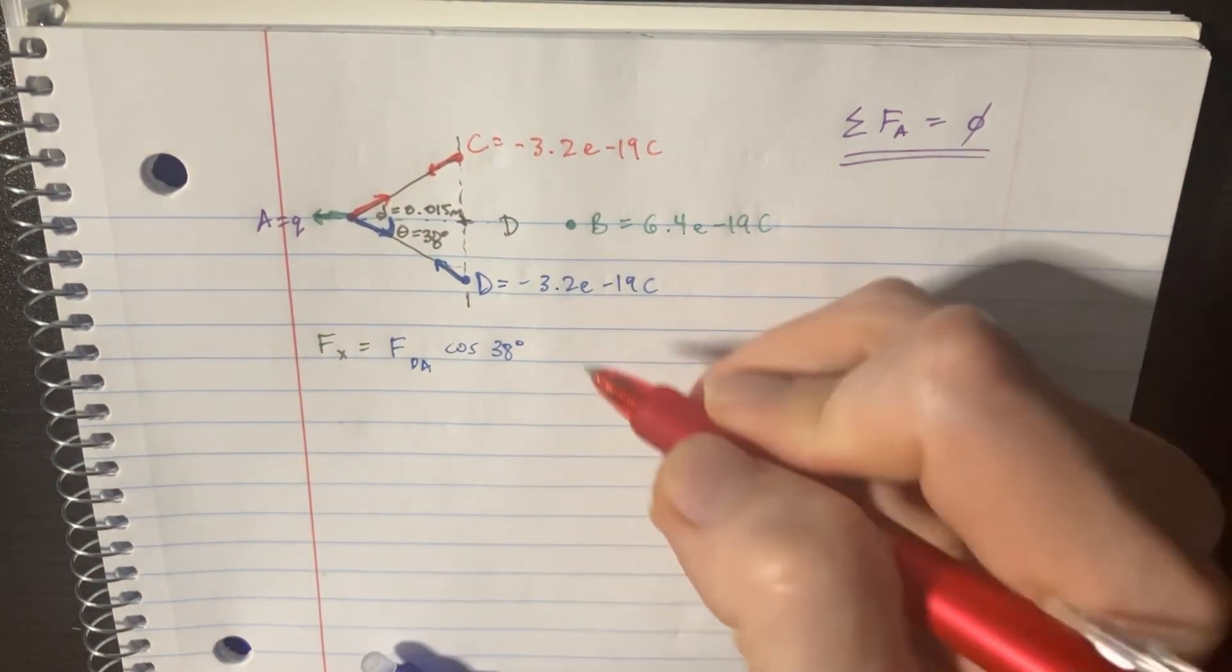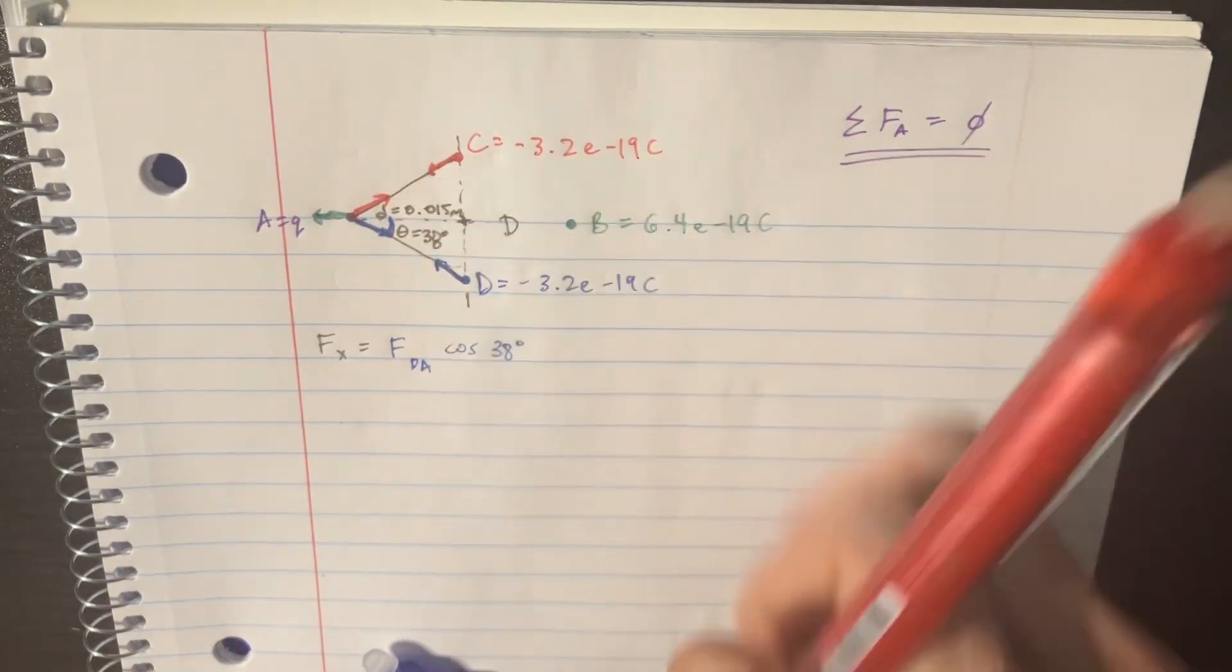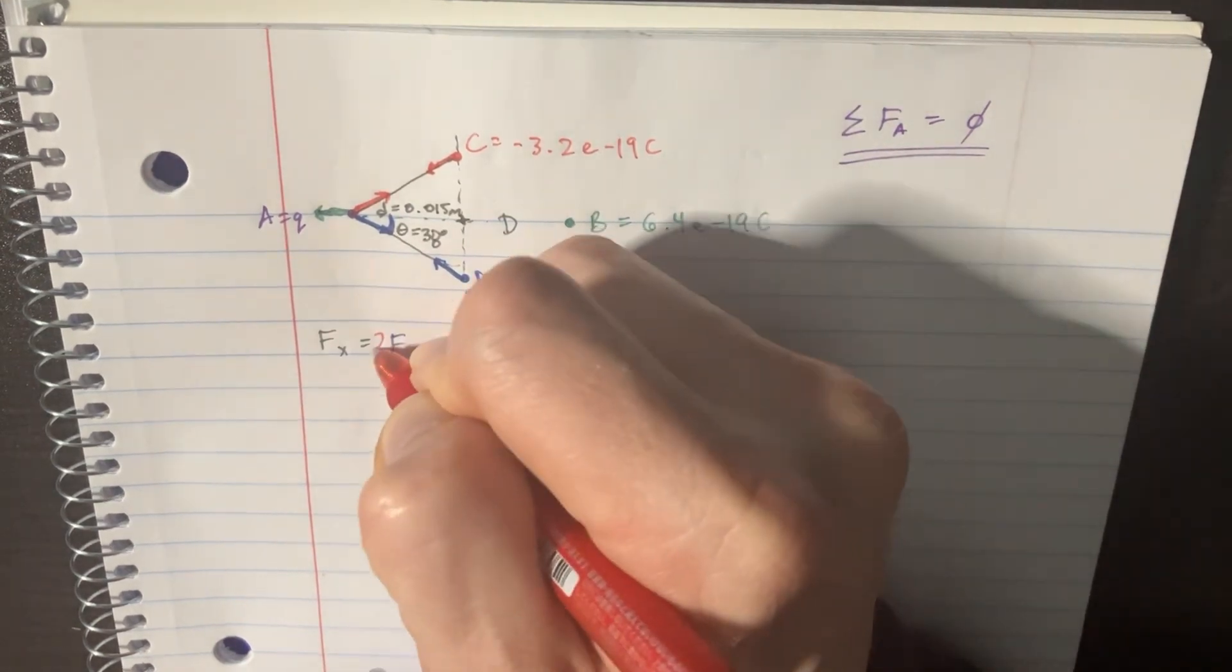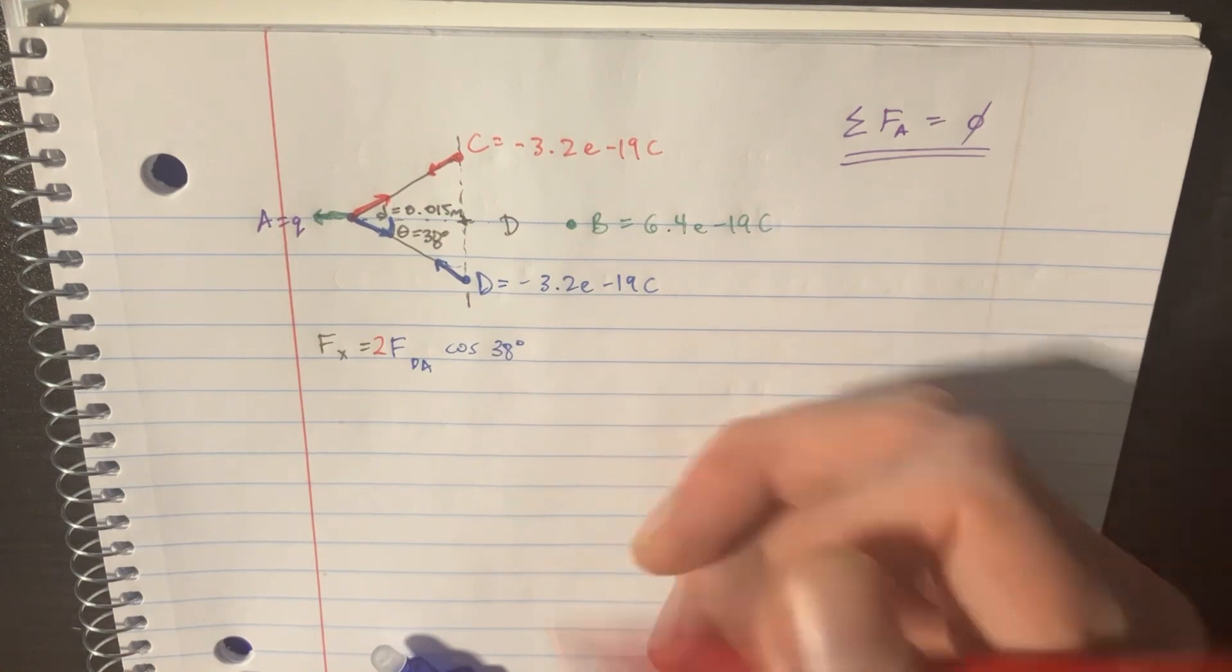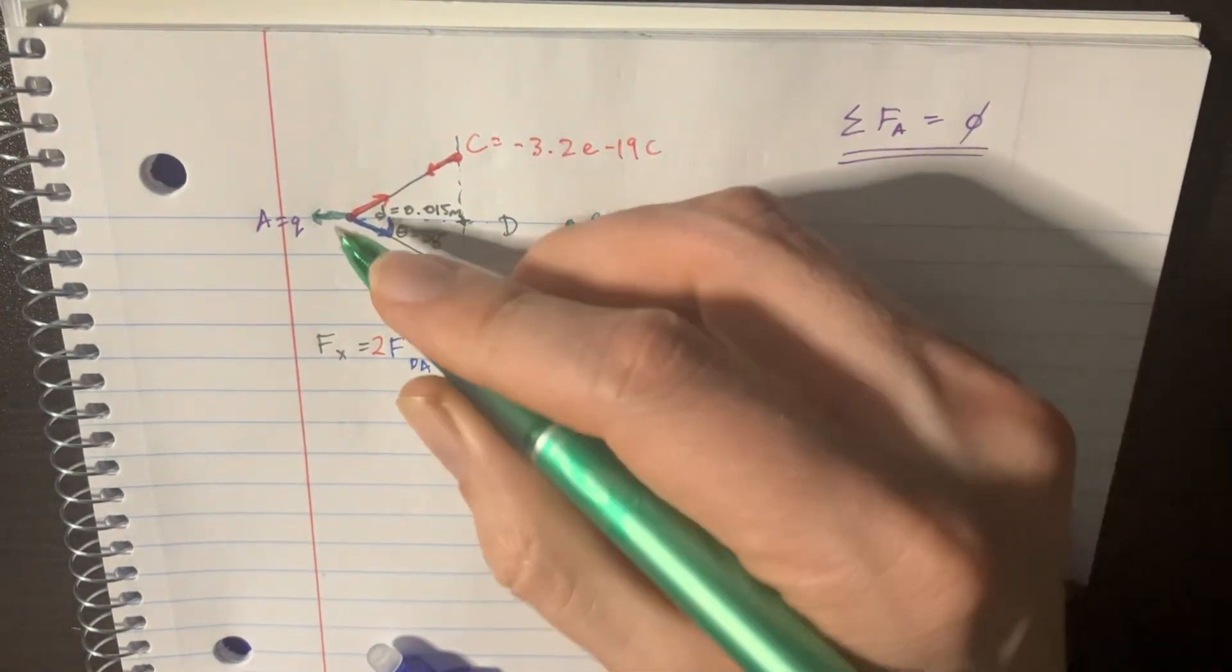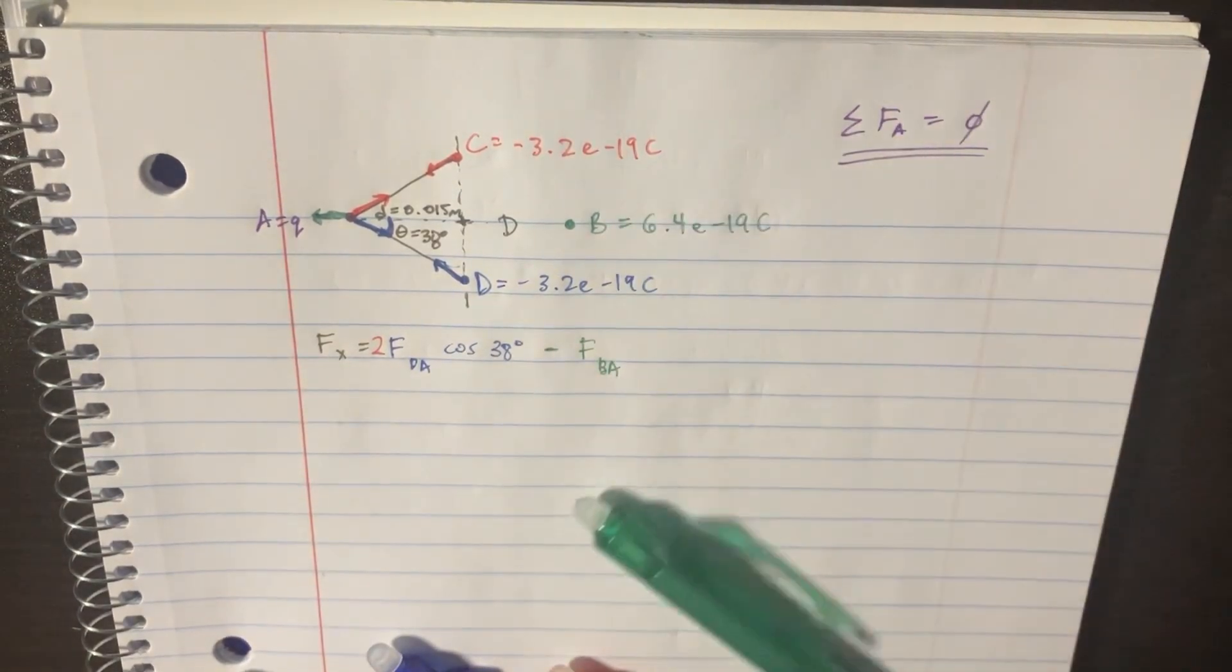And then we can also add in the force of C on A. But you're going to notice that this is the exact same force. So you can just literally just put two right there. So double that previous force that we found. And then we're going to subtract this one. That's going to be F of B on A. And that whole thing should equal zero.